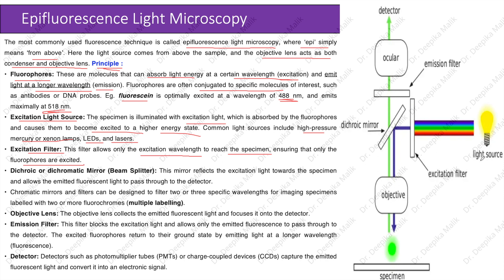As you can see in the diagram, light from the source hits the excitation filter and only light of a specific wavelength is allowed to pass to the specimen, which is labeled with a certain fluorophore. The dichroic or dichromatic mirror (beam splitter) reflects the excitation light towards the specimen and allows the emitted fluorescent light to pass through to the detector.